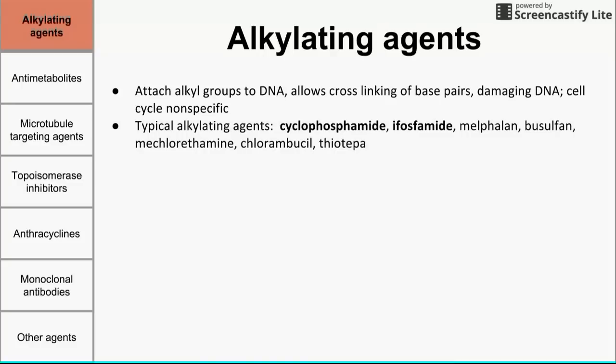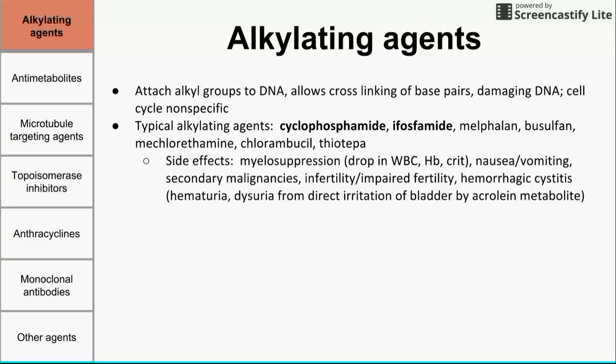We have typical and atypical alkylating agents. The two typical ones important to know are cyclophosphamide and ifosfamide. Side effects include myelosuppression — a drop in white blood cells, hemoglobin, and hematocrit — nausea and vomiting, secondary malignancies, infertility, and hemorrhagic cystitis. Hemorrhagic cystitis causes blood in the urine and pain with urination, caused by irritation of the bladder from the acrolein metabolite.